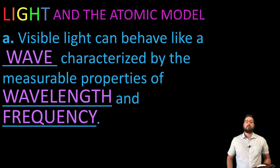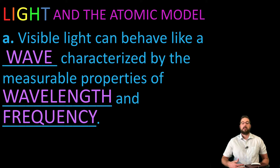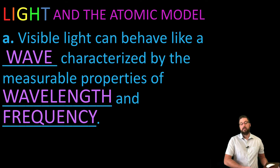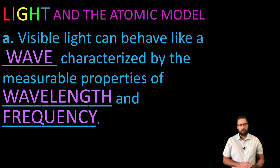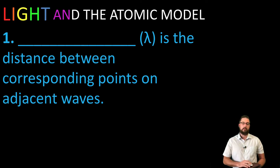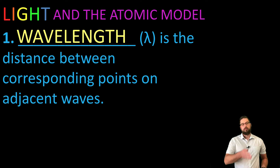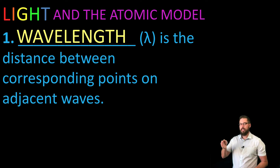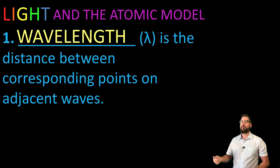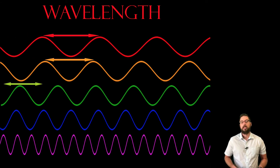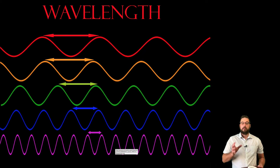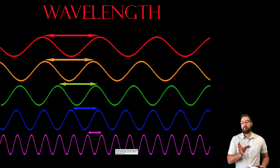Visible light can behave like a wave, which is characterized by wavelength and frequency. The wavelength is the distance between corresponding points on adjacent waves — if you start on one point and move until the wave starts to repeat itself, that's the wavelength. Notice how the red wave has a longer wavelength than the purple wave; as you go down, the wavelength gets smaller.